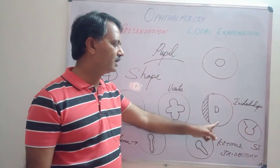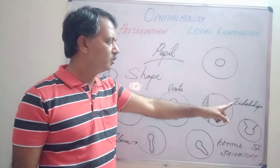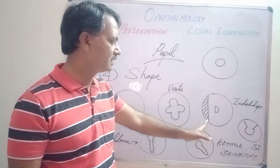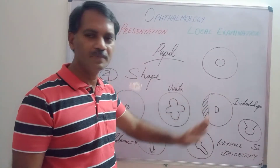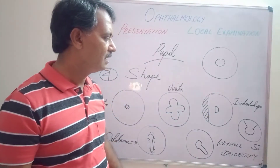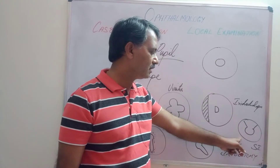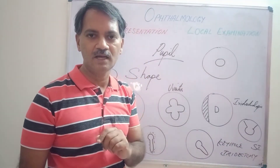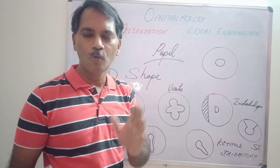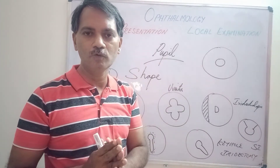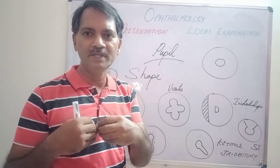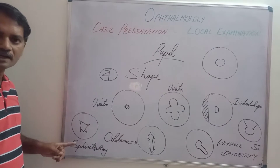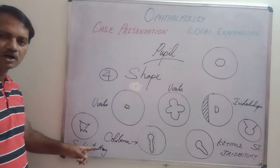A D-shaped pupil is due to iridodialysis — separation of the iris from the ciliary body on one aspect leads to D-shaped pupil formation. Another example of irregular shaped pupil is sector iridectomy, where one portion of the iris is removed to allow lens delivery in cataract surgery, which we have already discussed under the iris.